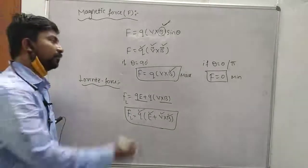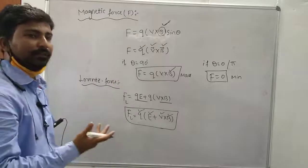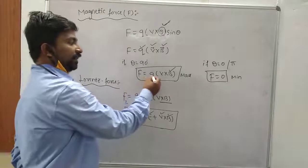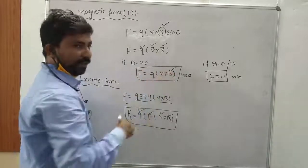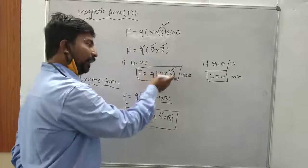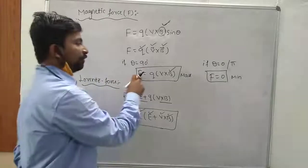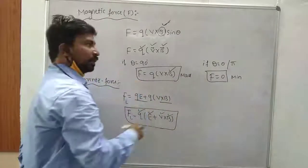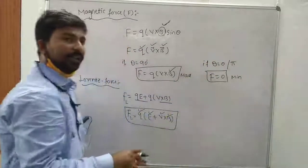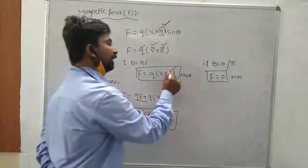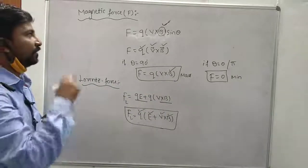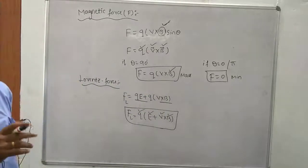When is the magnetic force maximum and minimum? If theta equals 90 degrees — charge moving perpendicular to the magnetic field — the magnetic force is maximum. If theta equals 0 or 180 degrees — charge moving parallel to the magnetic field — that is the minimum magnetic force.